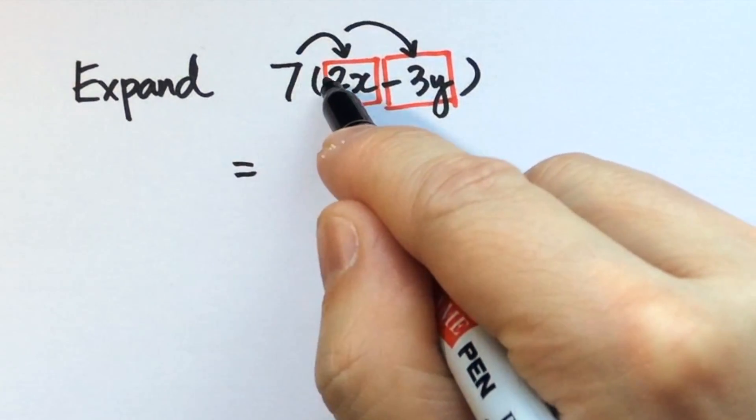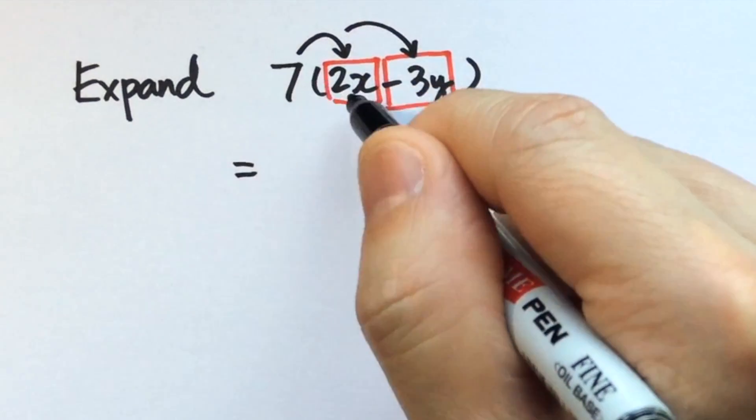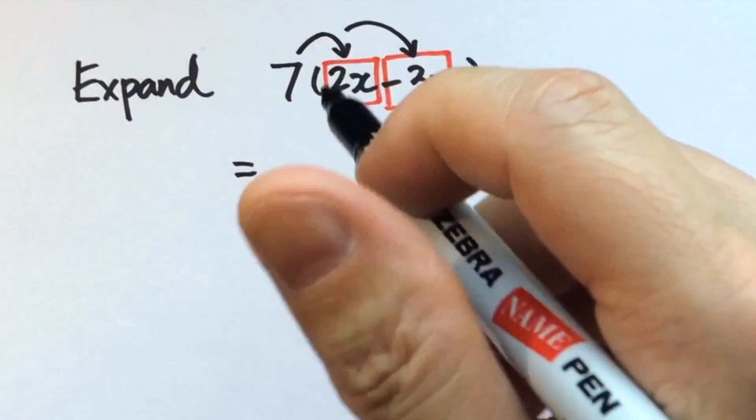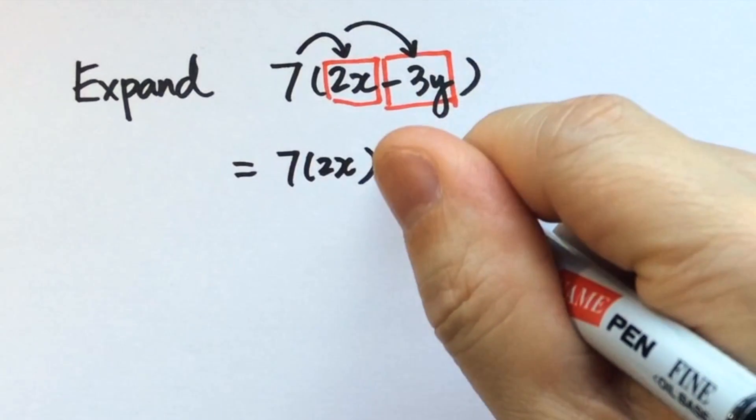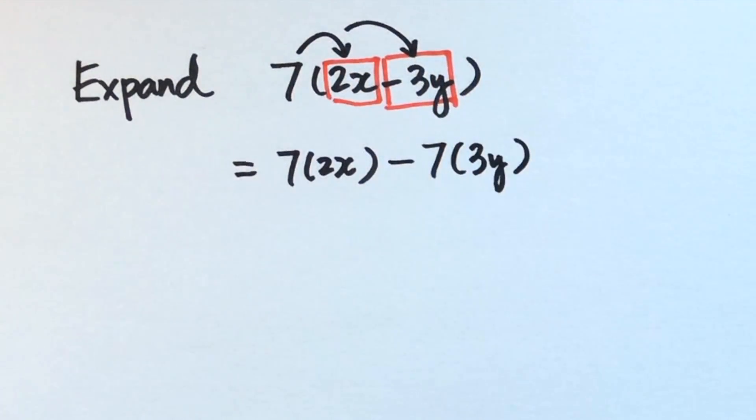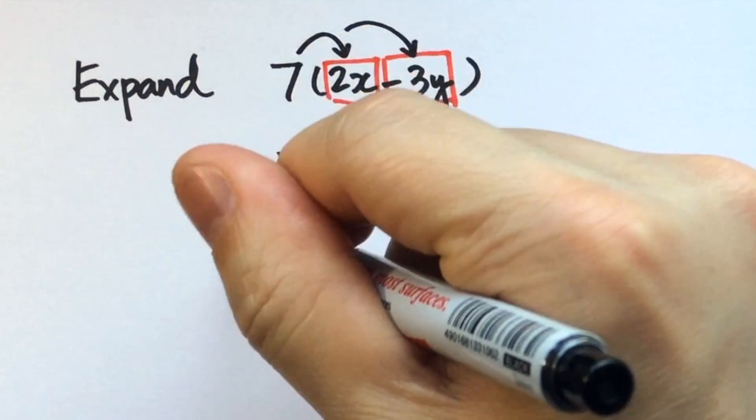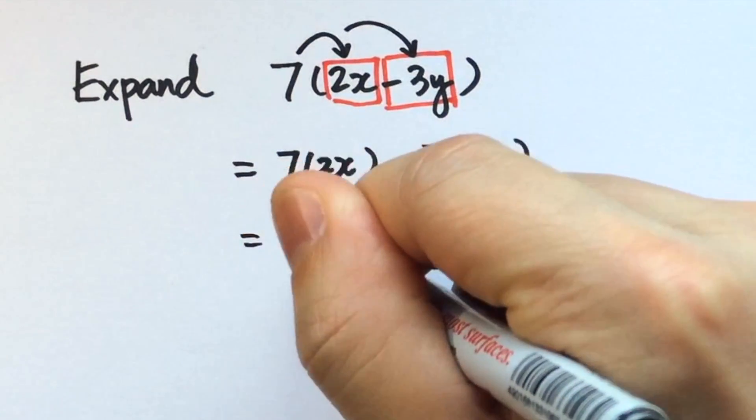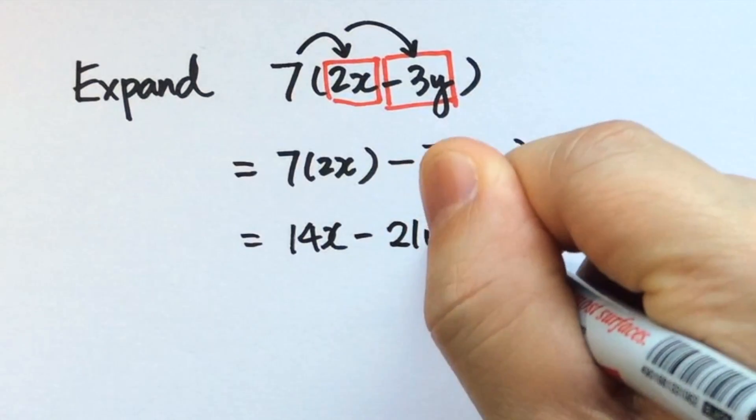term will get a copy of the seven. So seven times 2x will be like this, and then minus seven times 3y. And therefore this is 14x minus 21y.